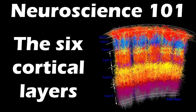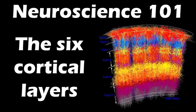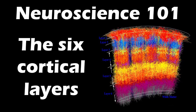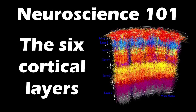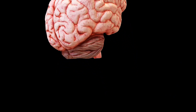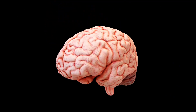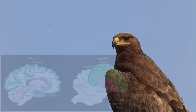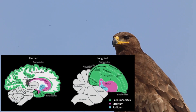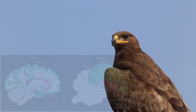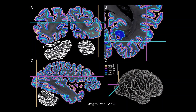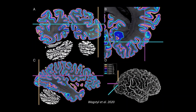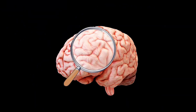Hello everyone and welcome back to Neuroscience 101. Today we're going to talk about the six layers of the mammalian cortex. The cerebral cortex is the outermost layer of the mammalian brain. Other animals like reptiles and birds do have paleo structures that might resemble the cerebral cortex. However, a sheet with neurons containing six layers can only be found in the mammalian brain. Let's take a look at these six layers.